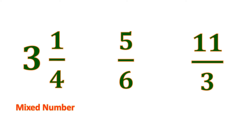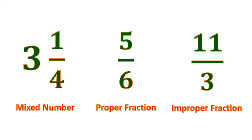The second example is five-sixths, where the numerator five is smaller than the denominator six — so this is a proper fraction. And eleven-thirds, where the numerator eleven is bigger than the denominator three — this is an improper fraction.